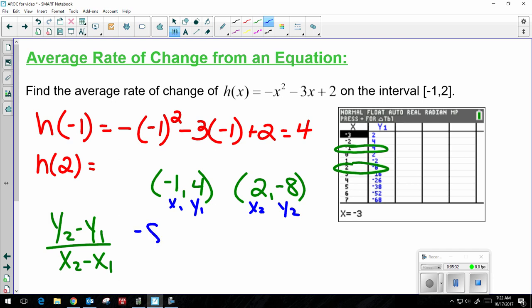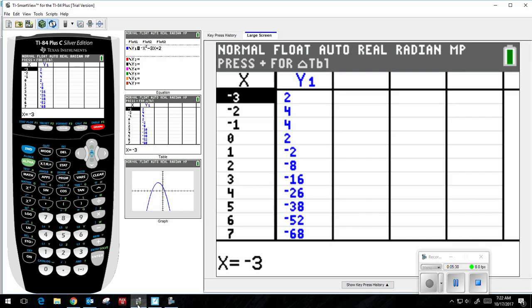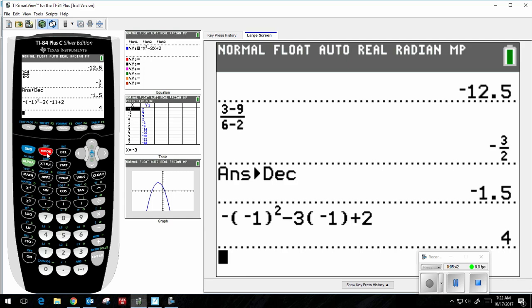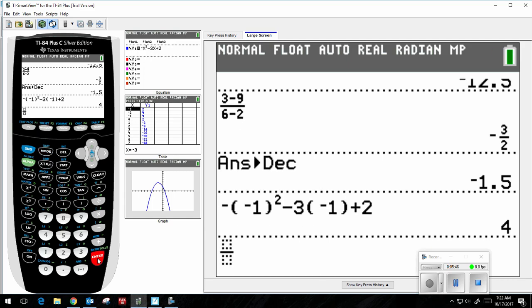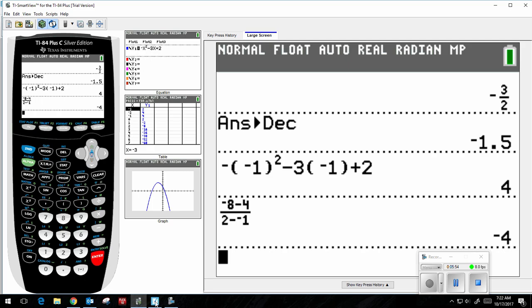So I have negative 8 minus 4 over 2 minus negative 1. Back to my calculator. Second quit to get back to the home screen. Alpha y equals, enter. Negative 8 minus 4, 2 minus negative 1. And negative 4 is my average rate of change.